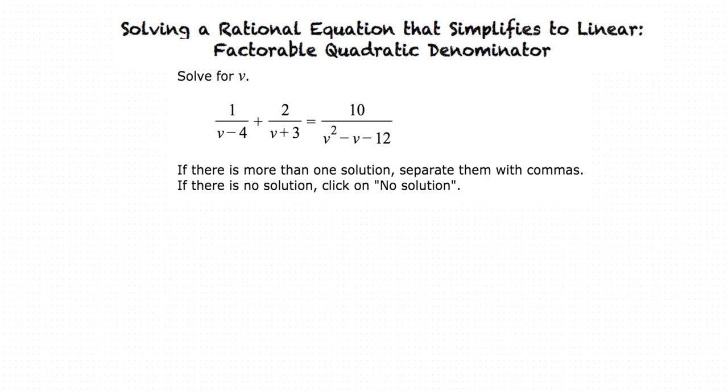First, we will factor out each denominator, if possible. This results in 1 over v minus 4 plus 2 over v plus 3 equals 10 over v minus 4 times v plus 3.